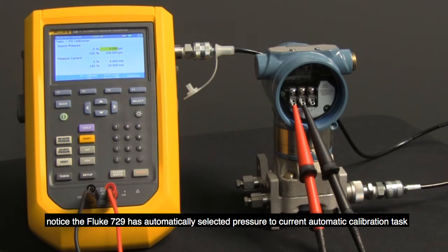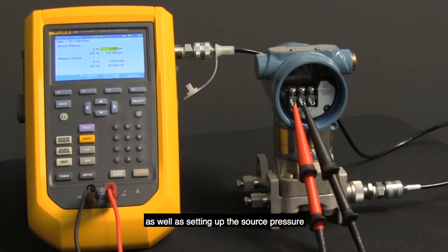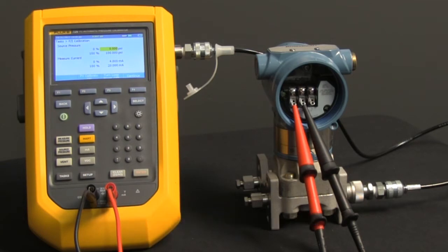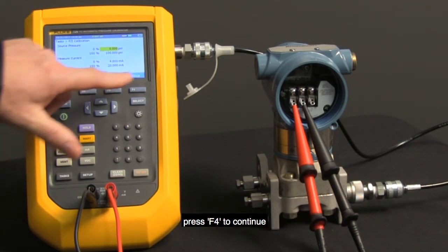Notice the Fluke 729 has automatically selected pressure to current calibration task, as well as setting up the source pressure and 4-20 output. So we know that it's 0 to 100 PSI. Press F4 to continue.